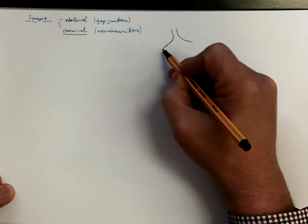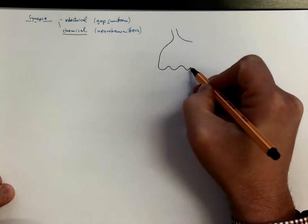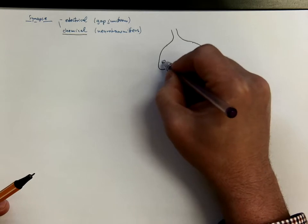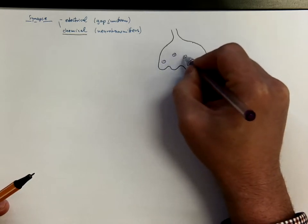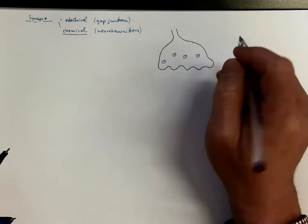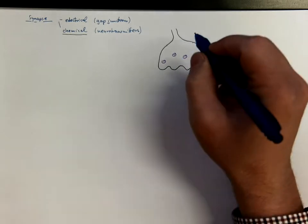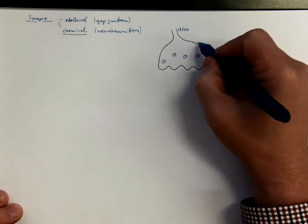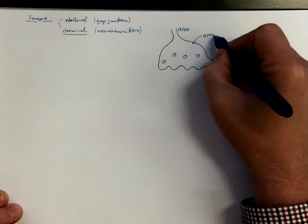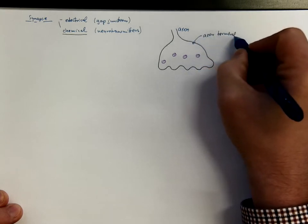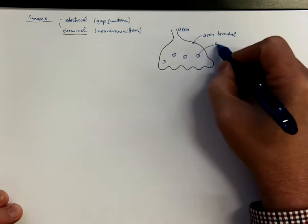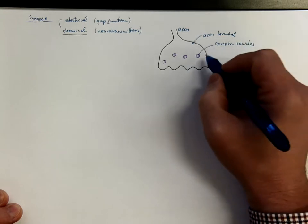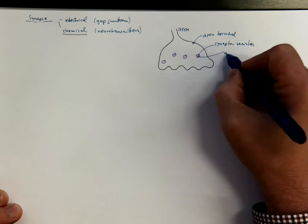If you have an axon, the terminal part is usually dilated and contains vesicles with neurotransmitters. There is a whole variety of neurotransmitters with different functions. This is the axon terminal with synaptic vesicles containing neurotransmitter molecules.